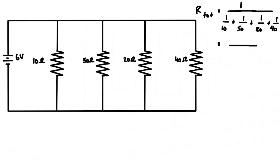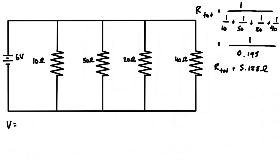We simplify that in the calculator and we get 1 over 0.195, which means we have a total resistance of 5.128 ohms.